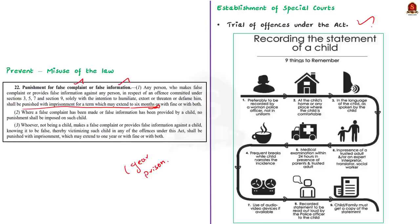The Act also provides child-friendly procedures. For example, the statement of a child can be recorded at the residence of the child or at a place of their choice. Preferably, a woman police officer not below the rank of sub-inspector can record the statement. The police officer should not be in uniform while recording the statement of the child. These are some examples of child-friendly procedures mentioned in the POCSO Act.